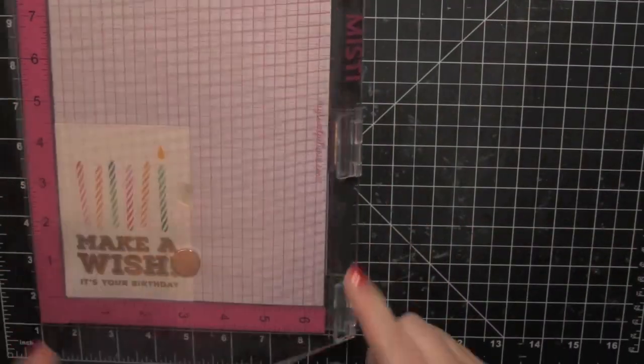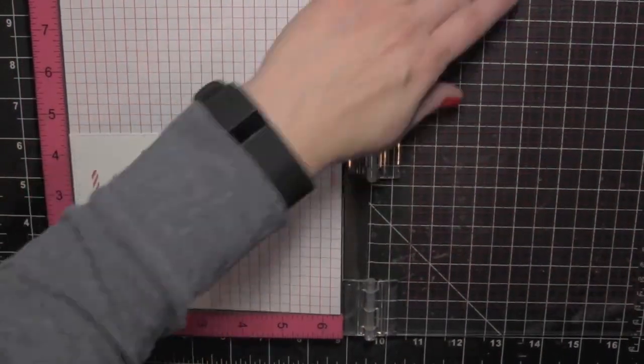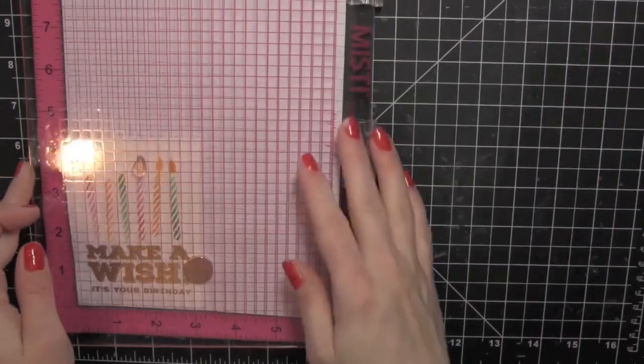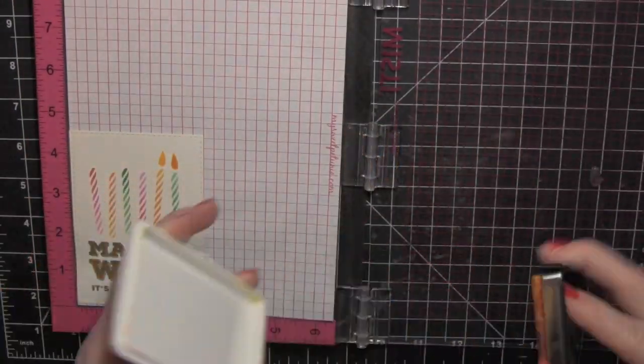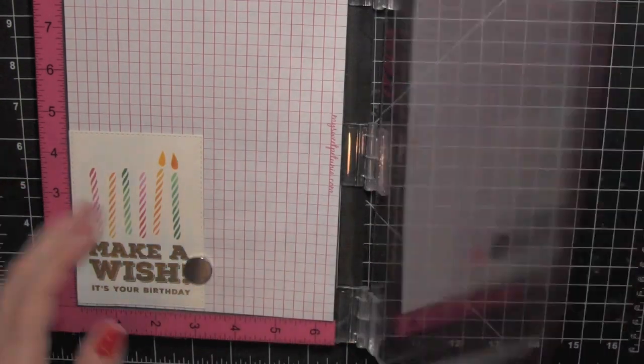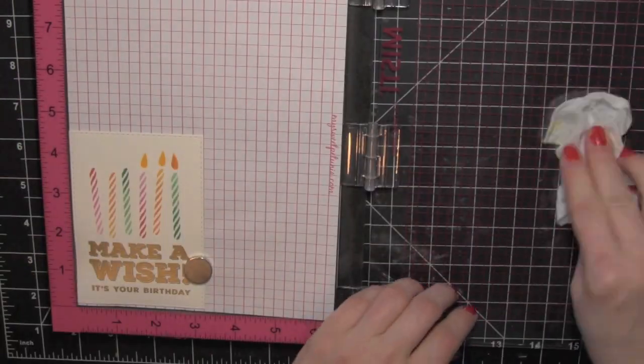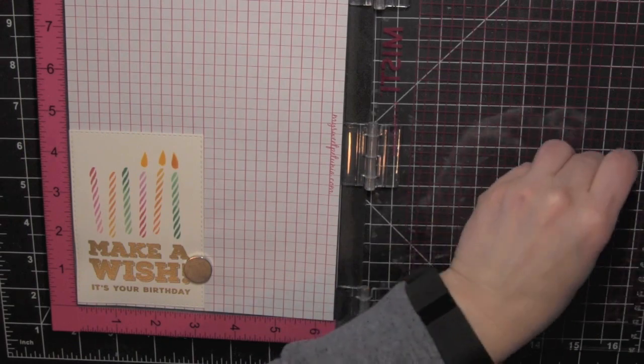The great thing again is that where I place that stamp is exactly where it's going to stamp on the actual paper. So I'm just simply moving it each time, making sure I have it lined up exactly where I want it to go.